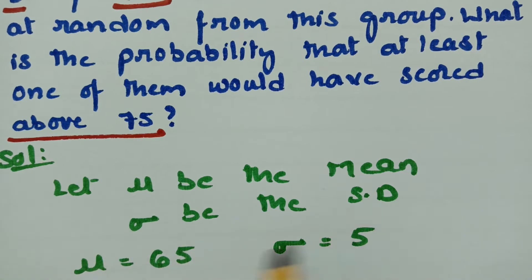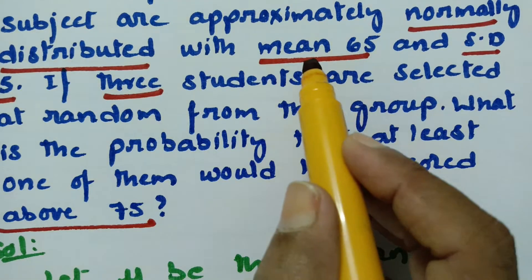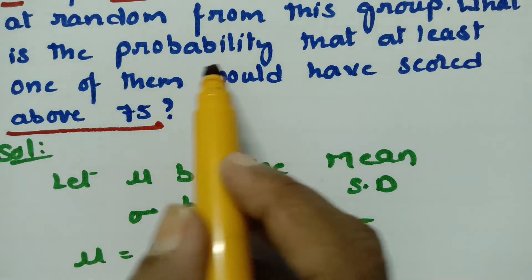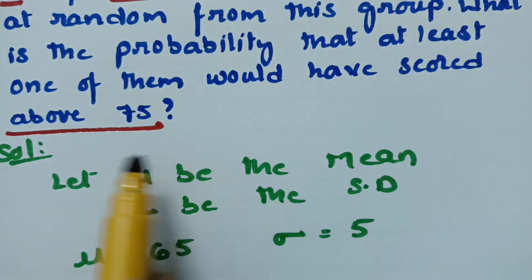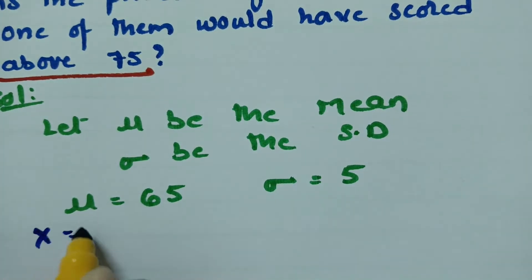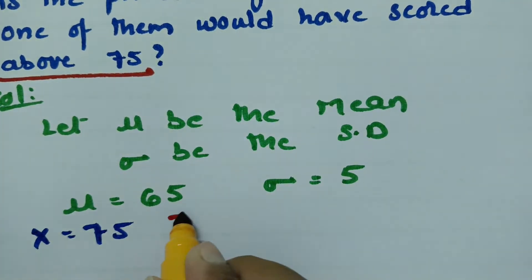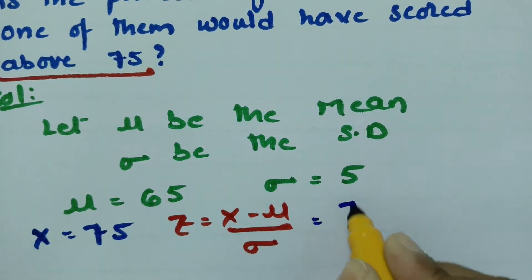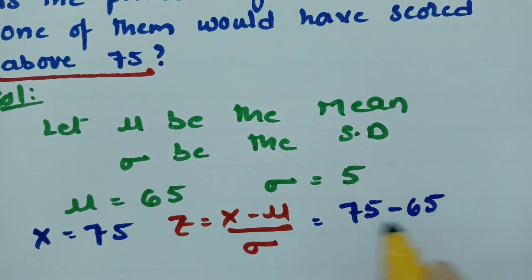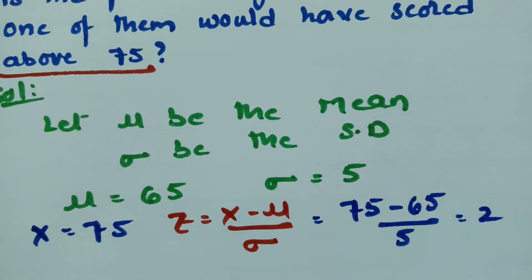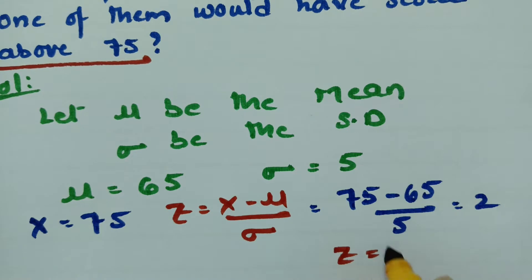Let mu be the mean and sigma be the standard deviation. Here the mean is given as 65 and standard deviation as 5. Now we calculate the z-value when x equals 75: z = (x - mu) / sigma = (75 - 65) / 5 = 10 / 5, which equals 2. So the z-value is 2.